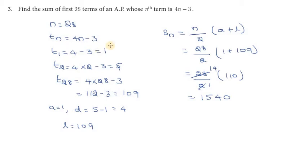Now, the first value t1 is a, so a = 1. Then d equals t2 minus t1, which is 5 minus 1 = 4. So a = 1 and d = 4.